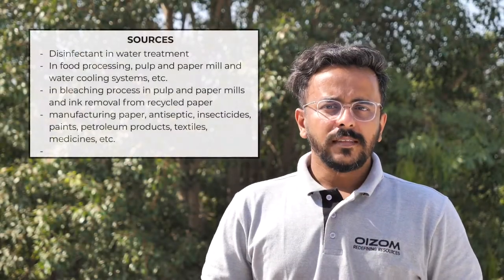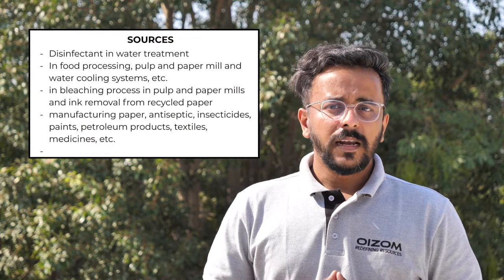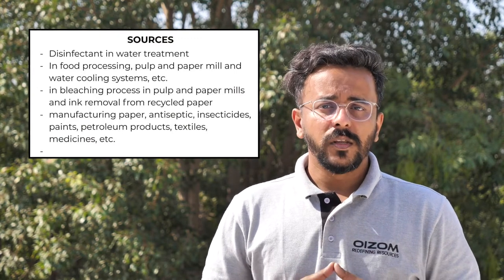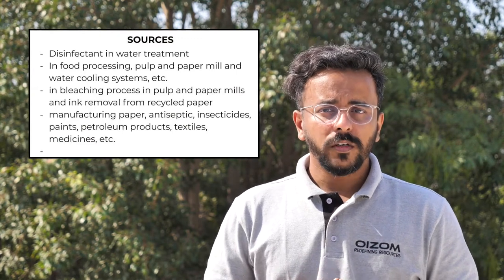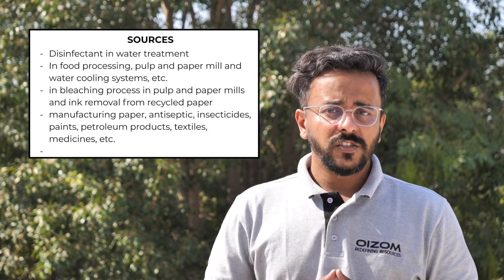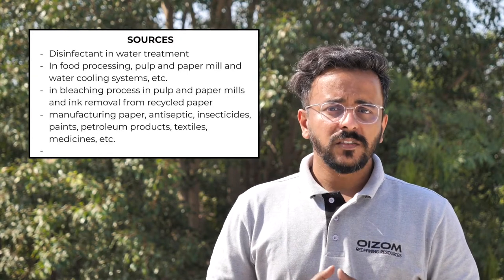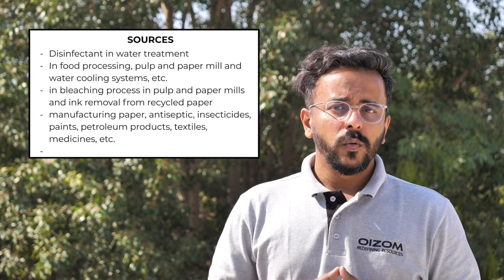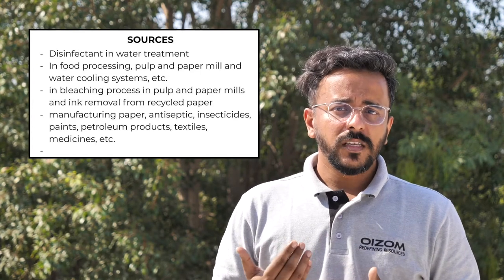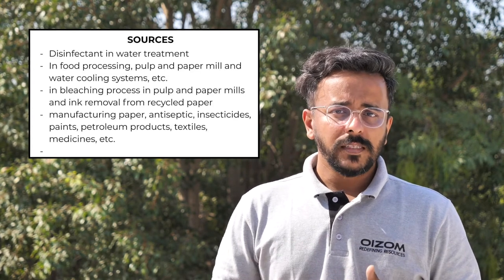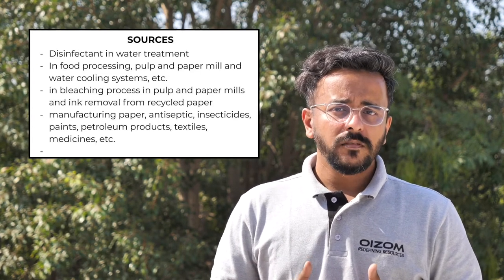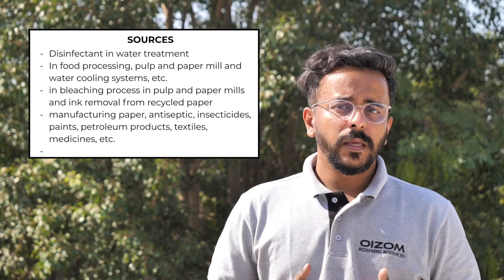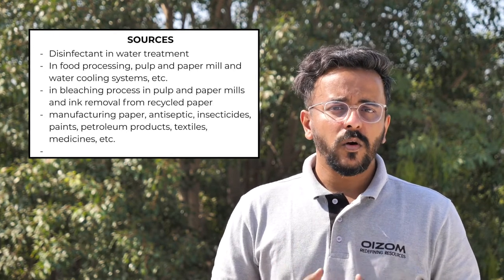Chlorine gas is commonly used as a household cleaner and disinfectant, as an oxidizing agent in water treatment to disinfect drinking water, as a disinfectant in industrial applications such as food processing, pulp and paper mills, and water cooling systems, in bleaching processes in pulp and paper mills and ink removal from recycled papers, and in the manufacturing of many products such as paper, antiseptics, insecticides, and so on.